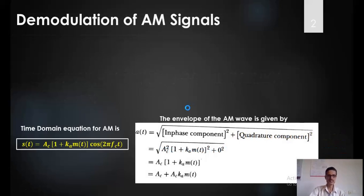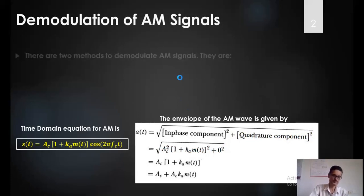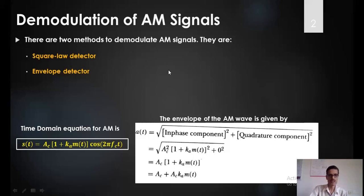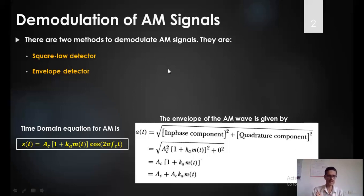Basically, there are two different types of demodulation. The first one is a square law demodulator and the other one is the envelope detector. A square law demodulator is a non-linear demodulator, while the envelope detector is a linear diode detector or linear diode demodulator. Depending on which portion of the characteristic of the diode we are operating, we can have square law demodulation as well as envelope detection.